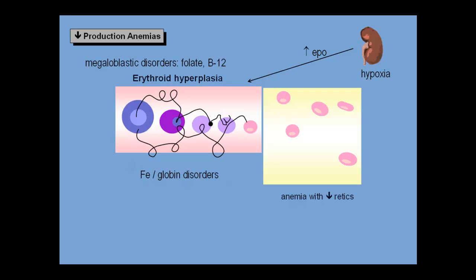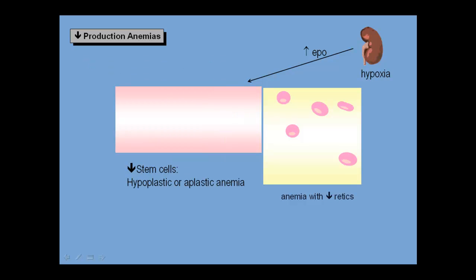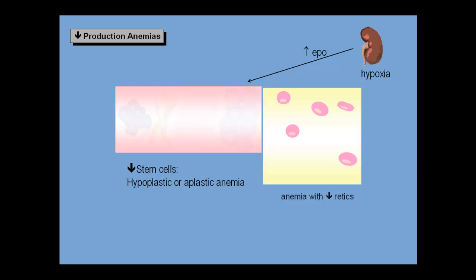Or you might have decreased stem cells, resulting in hypoplastic or aplastic anemia. Or the marrow could be invaded by stuff that shouldn't be there – clumps of metastatic tumor cells, fibrosis, granulomas or storage cells, or leukemia blast cells that effectively crowd out, take proliferative advantage over the normal marrow elements.